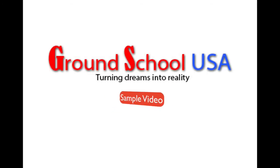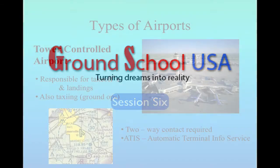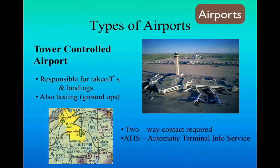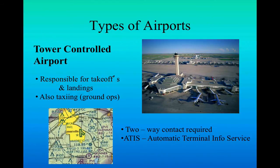There are two basic types of airports: tower-controlled airports and non-towered or uncontrolled airports. If you've flown on airliners, you've probably never been to a non-towered airport — there's always a large tower at those airports. Tower-controlled airports can be Class B, C, or D type airspace.